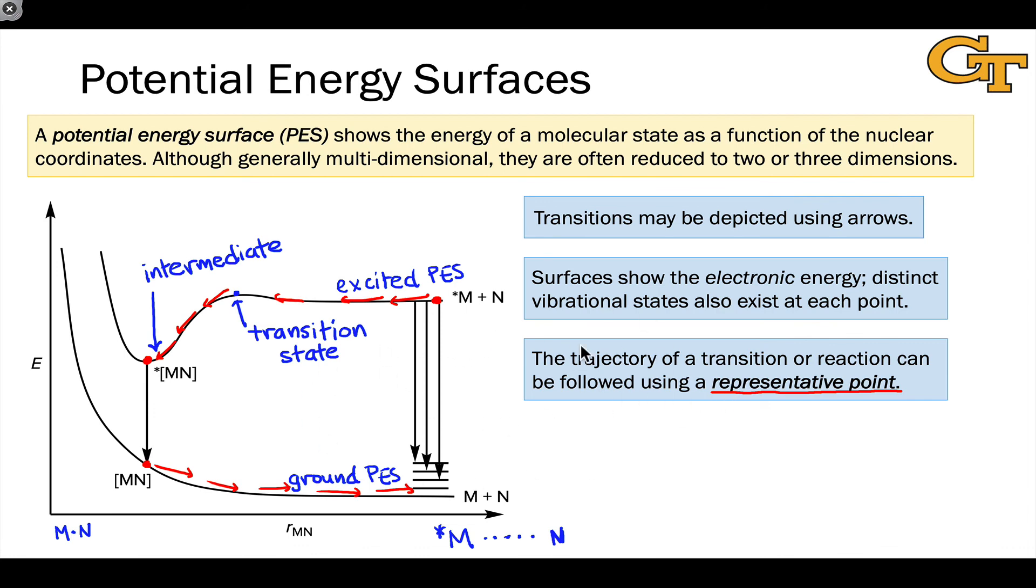So, long story short, the representative point on a potential energy surface diagram charts a trajectory across one or more potential energy surfaces and gives us a mechanism, almost like a movie. As the representative point moves, the structure changes, its geometry changes, the energy changes in a way that the PES diagram shows to us directly. And it gives us a very vivid picture of how the reaction takes place.